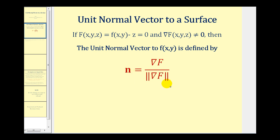Now we do need to be a little bit careful about this. We've talked about the gradient of little f in terms of x and y, and we've also talked about the gradient of big F in terms of x, y, and z. Remember the gradient of little f is going to be a vector in the x-y plane, and the gradient of big F is going to be a vector in space. So we're talking about a vector in space when we determine the unit normal vector to a surface.